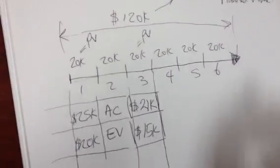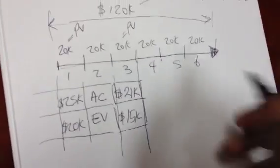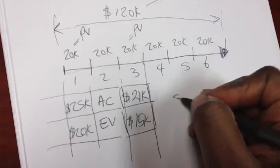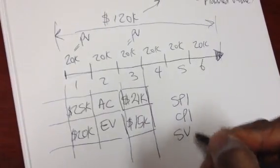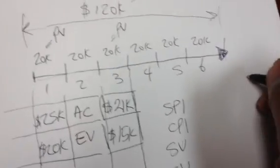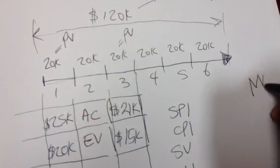So, I'll show you these three metrics very quickly. There's three metrics, three major metrics, or four, I beg your pardon. SPI, CPI, SV, and CV. I always tell my students this. I tell them earned value is king. In fact, I like to think about...